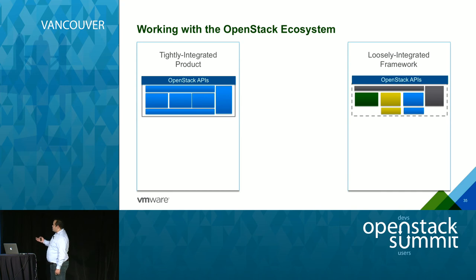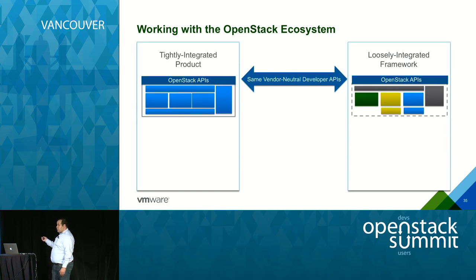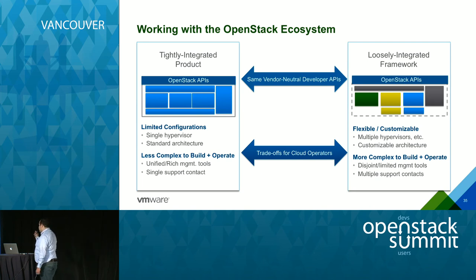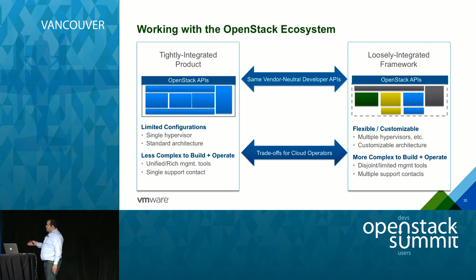Going back to the ecosystem — there's the loosely integrated framework approach where you plug in whatever component you want, versus a tightly integrated product that's pre-integrated, each with pros and cons. With OpenStack you have the same vendor-neutral APIs on both, which is one of the benefits. On one hand you get ultimate flexibility with multiple hypervisors and joint management tools — either paying someone to stitch it together or doing it yourself if you have the skills.